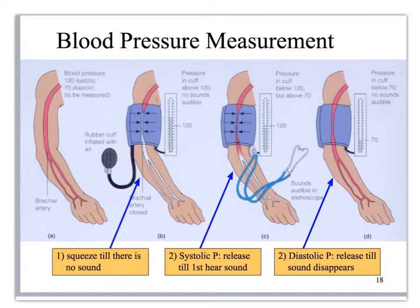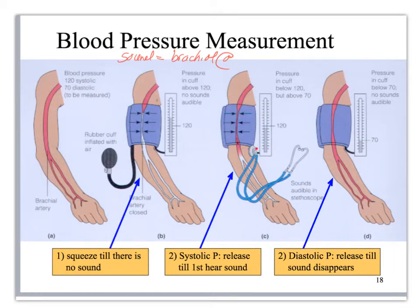When you have someone's blood pressure as 90 over 60, the 90 is systolic pressure and the 60 is diastolic pressure. When you're measuring that pressure, you're looking for the change in sound in the brachial artery. You put a blood pressure cuff on it, squeeze the bulb — it cuts off circulation, there's no sound. Then you ease off the bulb with a stethoscope placed over your antecubital fossa. When you hear a sound come back, that is your systolic pressure. When the sound disappears again, that is your diastolic pressure.